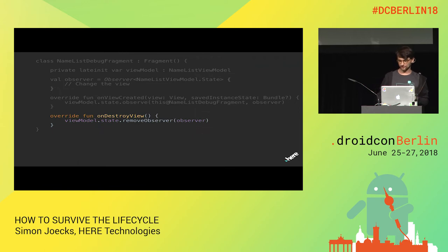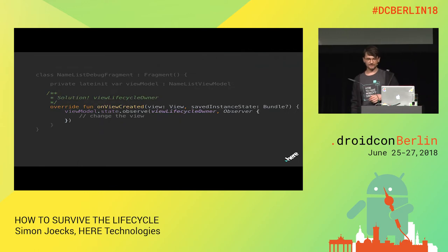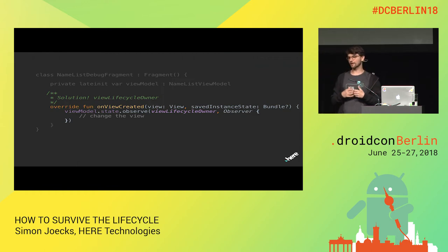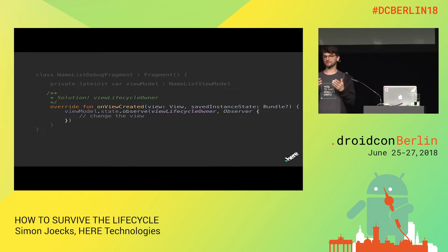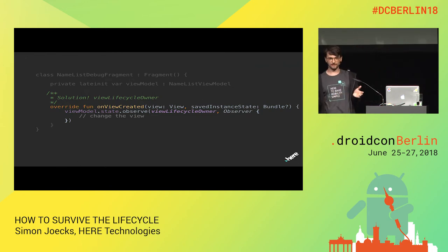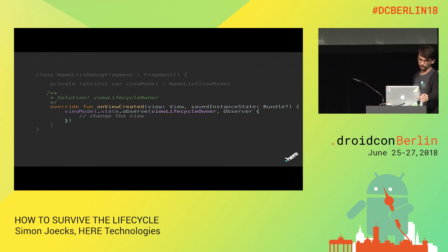In Google I/O 2018, they realized they had to dedicate a certain lifecycle for this, and this is the View LifecycleOwner or the view lifecycle. This is a very particular lifecycle that is only available after onCreateView and until onDestroyView. With this one, you're totally safe — when the view is destroyed, this lifecycle is marked as destroyed and the observer is removed automatically. So you have your beautiful setup again without any additional remove code, and the architecture components come back to their promise of being very simple and helping with application development.